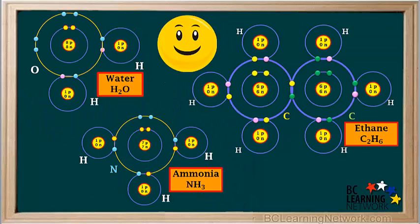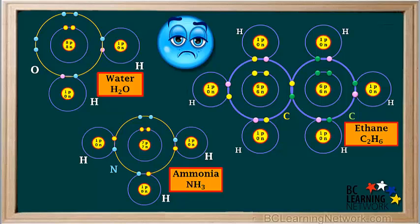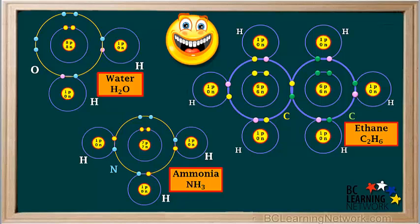Bohr diagrams provide us with a useful model for visualizing how atoms form covalent bonds by sharing unpaired valence electrons. But keep in mind that Bohr diagrams are only models. Modern models of atoms and molecules do not actually picture electrons in circular shells around the nucleus like these diagrams suggest. However, even though these are not accurate, they are relatively simple, and they do help us understand why molecules form the way they do. So Bohr diagrams are still useful to us.